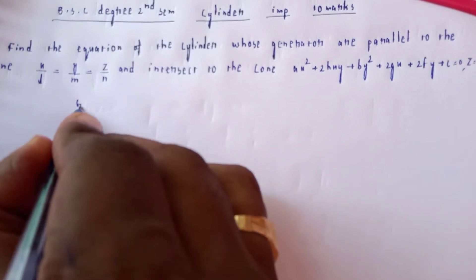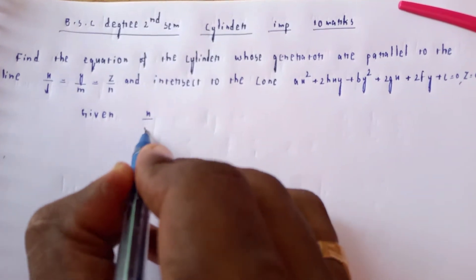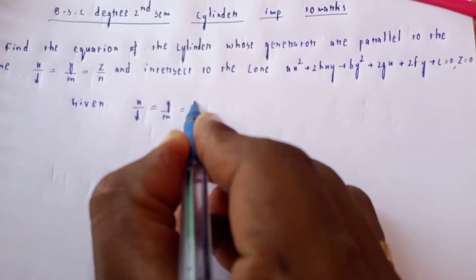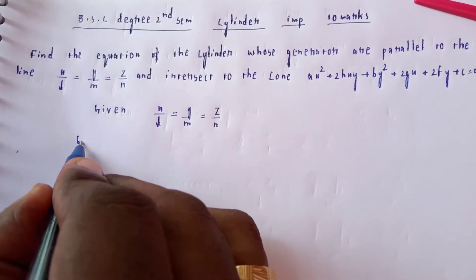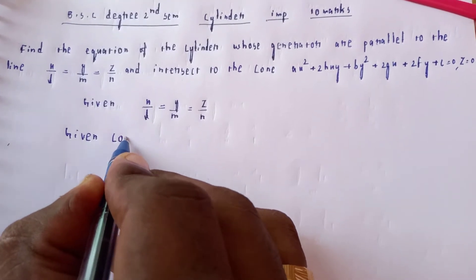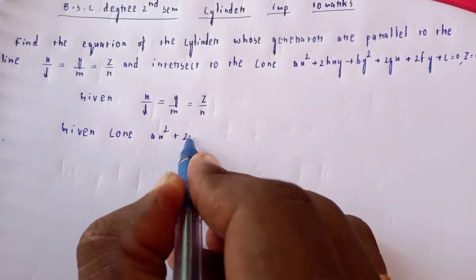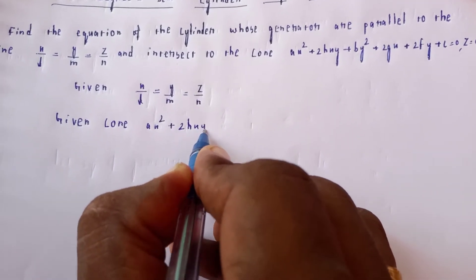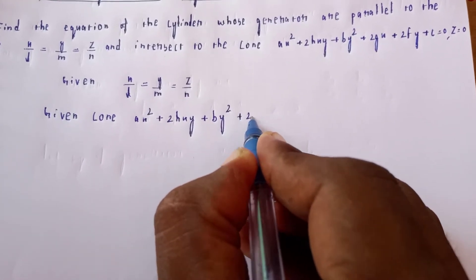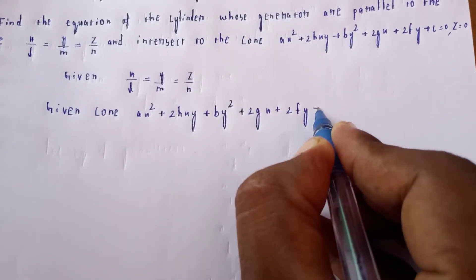Given: the cone (which is the given ras cone), and the given line is x/l = y/m = z/n. The given cone equation is ax² + 2hxy + by² + 2gx + 2fy + c = 0.